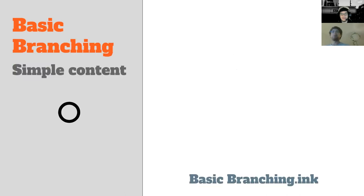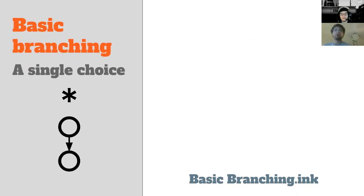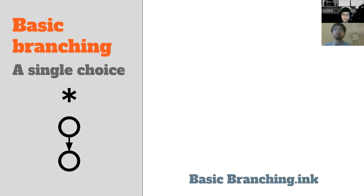The most basic branching interactive story is just a single piece of content, then we can add a choice — when you make this choice, you go from one piece of content to another. There's a demo in the demos folder called basic_branching.ink which might serve as a good example of how this works. Now we can have a branching choice — the same as before, except now we have two options.